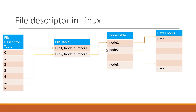In the diagram, we can also see the file table, inode table, and data blocks. Each entry in the file descriptor table corresponds to a file entry in the file table, which internally points to a corresponding inode entry in the inode table, which will internally point to actual data on the disk. If you want to learn more about inode, please follow the link in the description. For this video, we have to understand that a file descriptor is a unique identifier which represents an open file for a particular process in Linux.